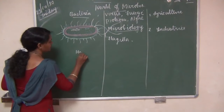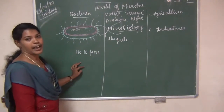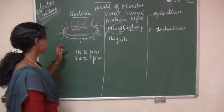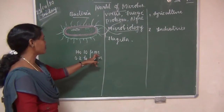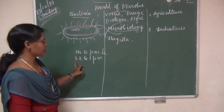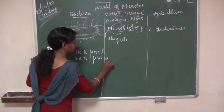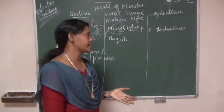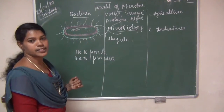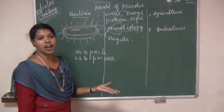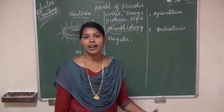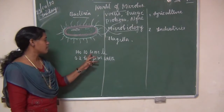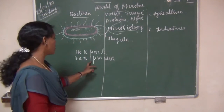The size of bacteria varies from 1 to 10 micrometers in length and 0.2 to 1 micrometer in width. Bacteria are unicellular, microscopic, and prokaryotic organisms. They do not have a nucleus and other cellular organelles. They are motile or non-motile.